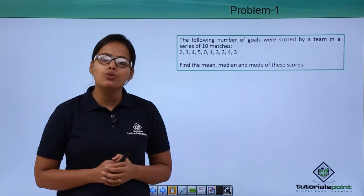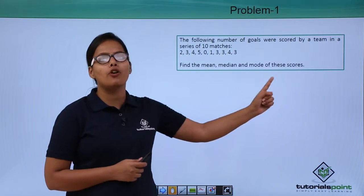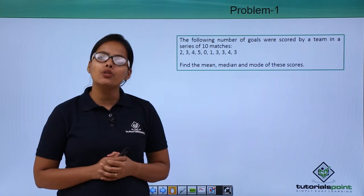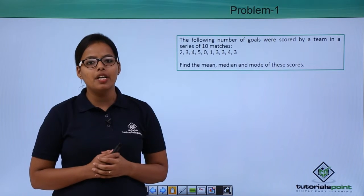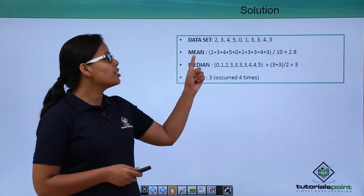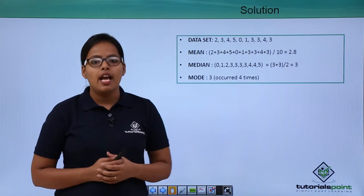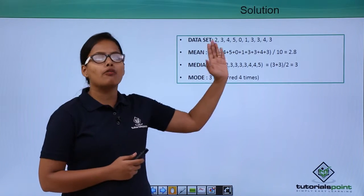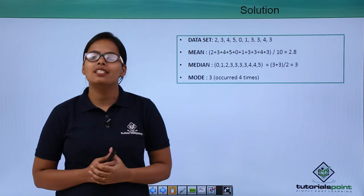Now what you need to do here: you need to find the mean, median and mode of these scores. And how are you going to do that? Let's see, as I have already discussed this with you. First, you know that this is the data set, and this data set is nothing but the number of goals scored in all these 10 matches.